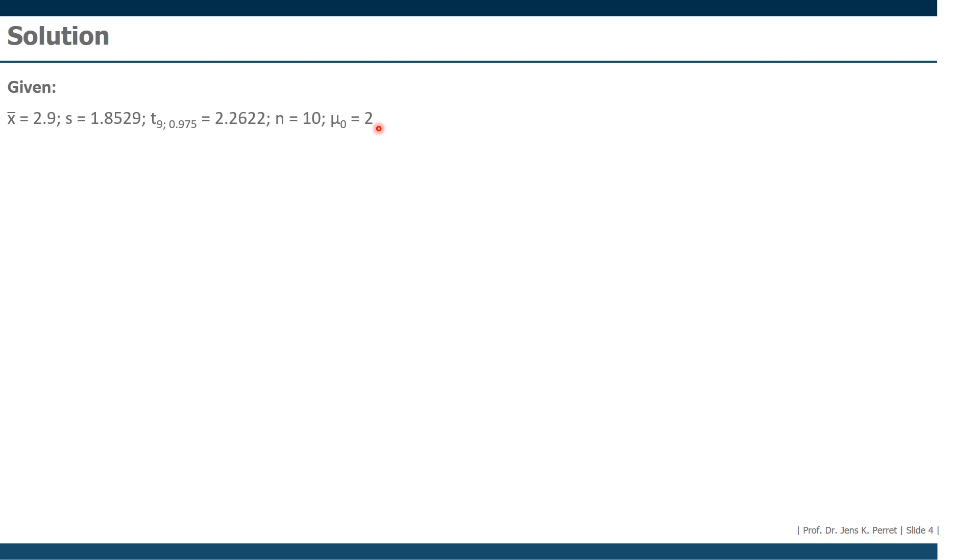To actually do the test we need a test statistic. For the t-test this is given as the square root of the number of observations, so the square root of 10, times the difference between arithmetic mean and test value, 2.9 minus 2, divided by the standard deviation. If we calculate this expression we get 1.536.